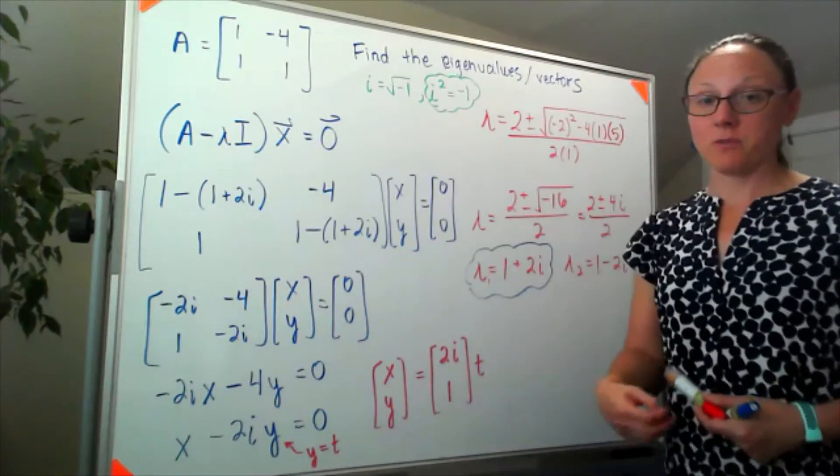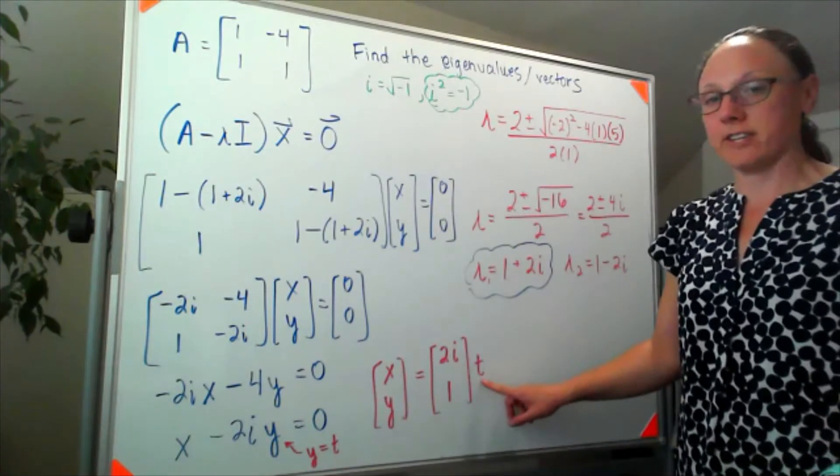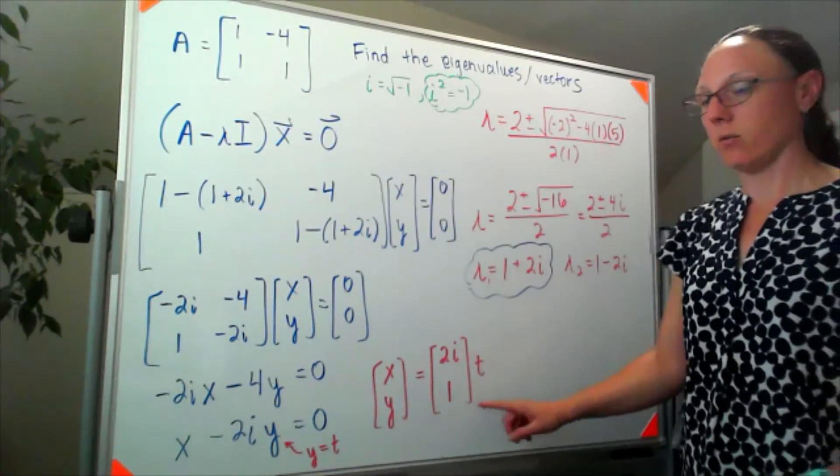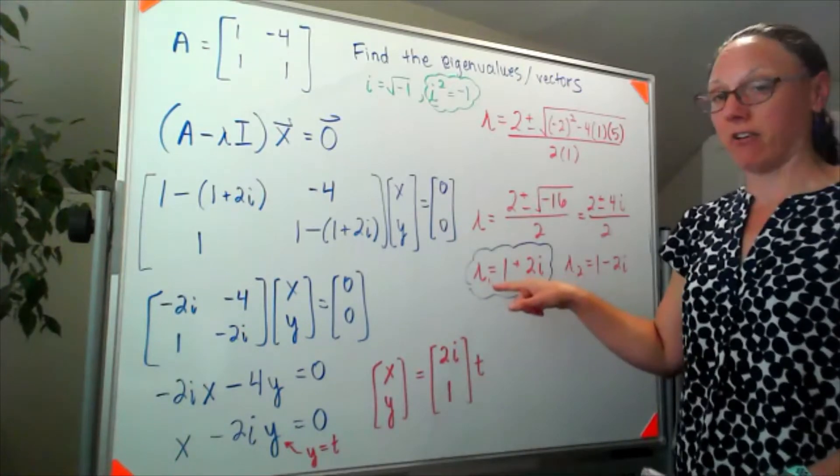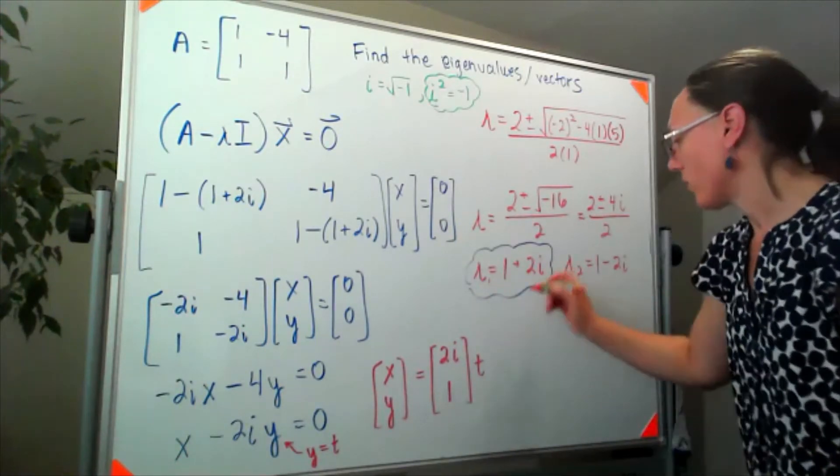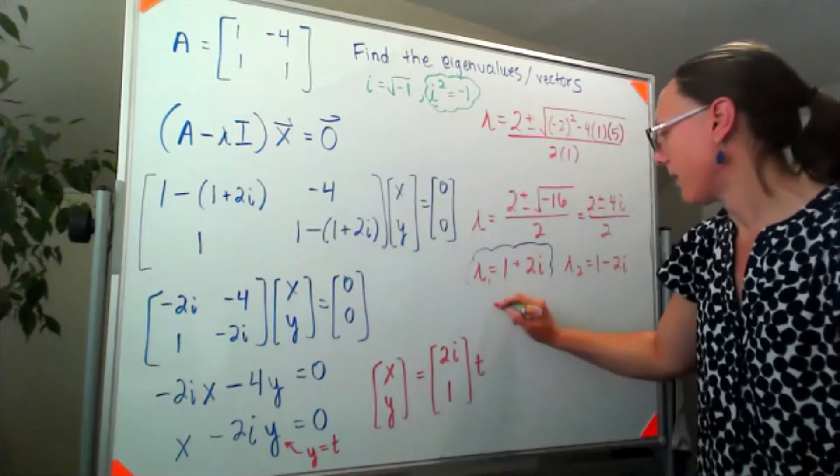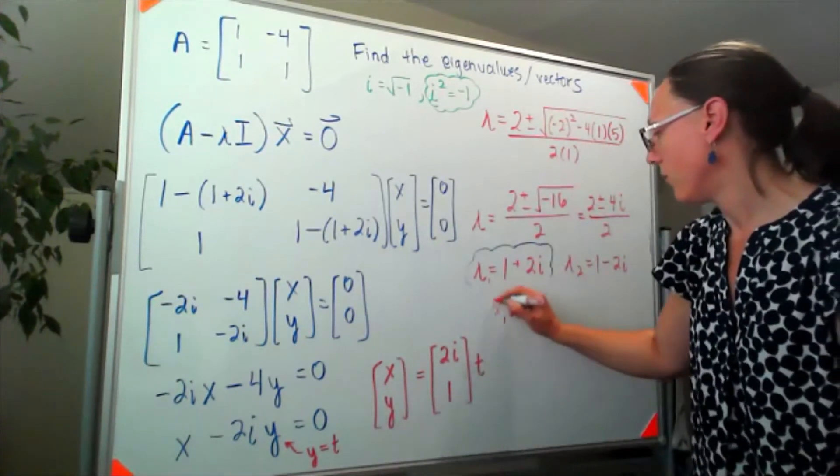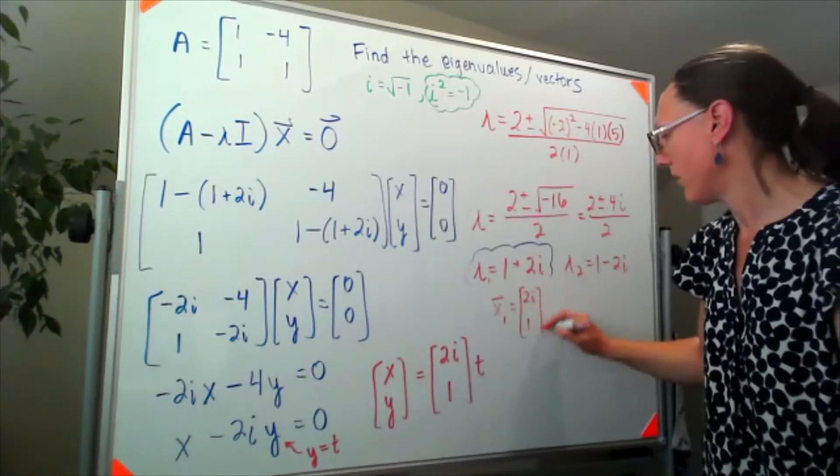And again, if I choose a specific eigenvector, I can just choose 1 for t. So 2i, 1 would be the eigenvector associated with this eigenvalue. So I'll just expand this bubble here and write that my x1 was 2i, 1.